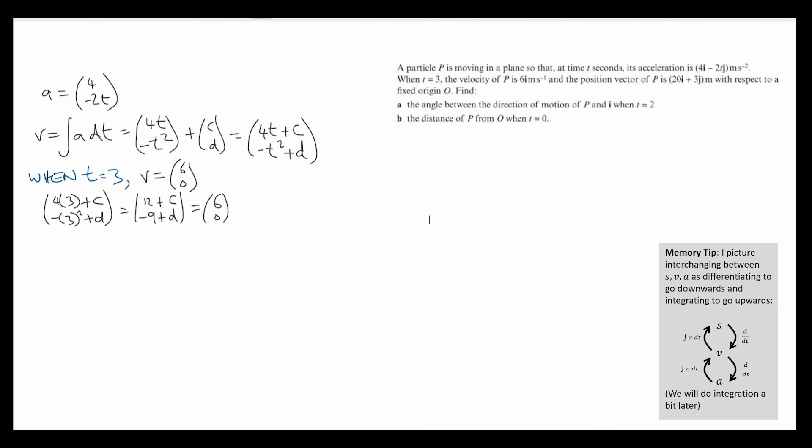So in the horizontal, if we're comparing i components, we know that 12 plus c equals 6, meaning c must be negative 6. And in the j component, in the vertical component, when we compare those, we see that negative 9 plus d equals 0, meaning d must be 9. So now we've found c and d, we can write the full velocity function.